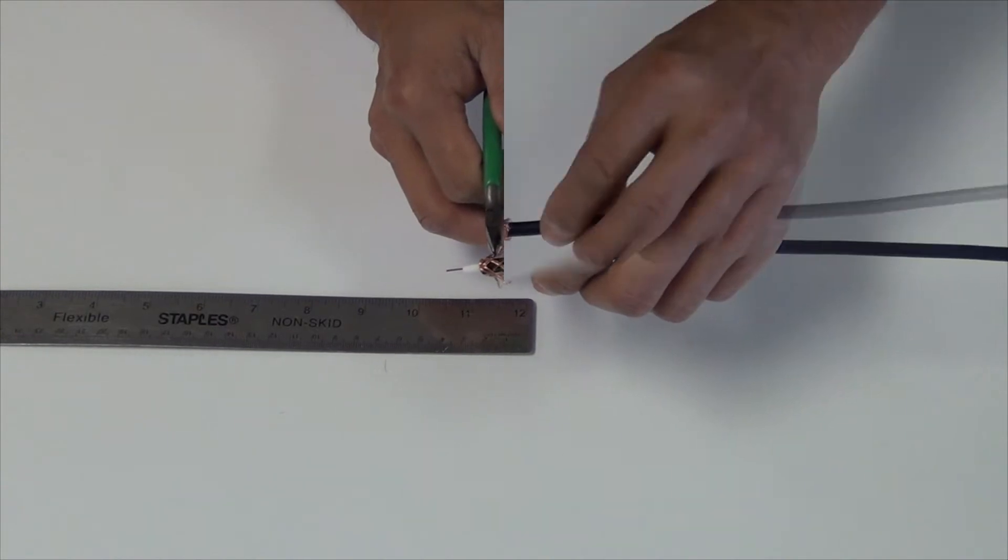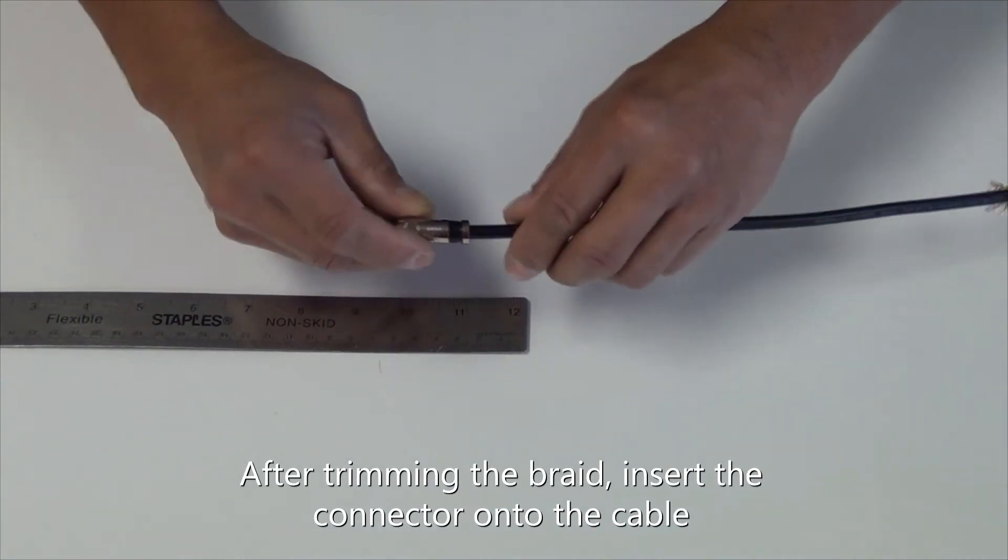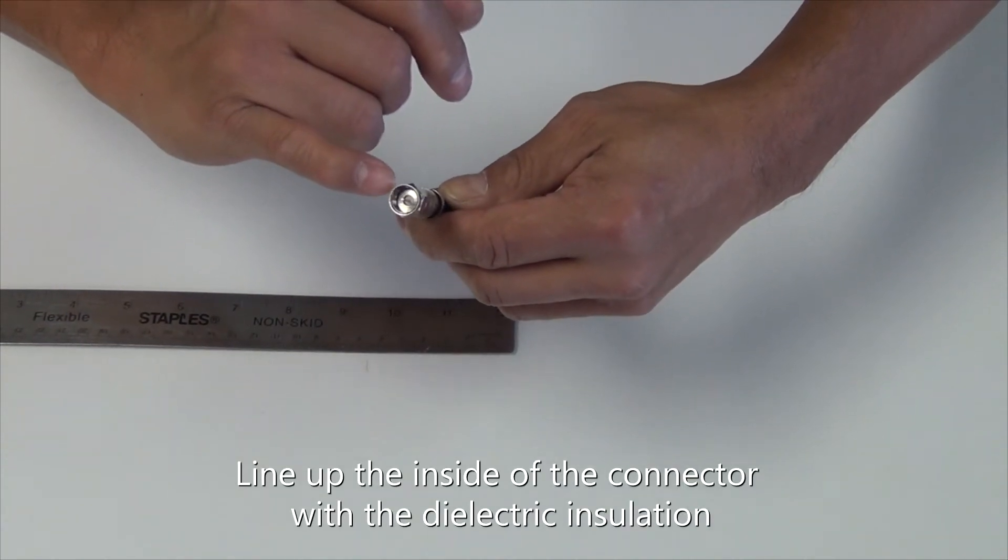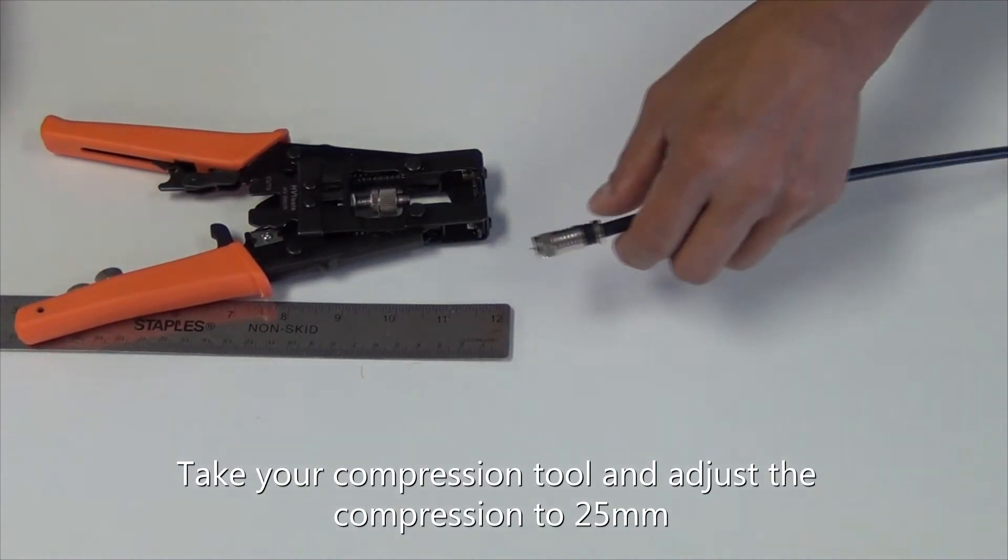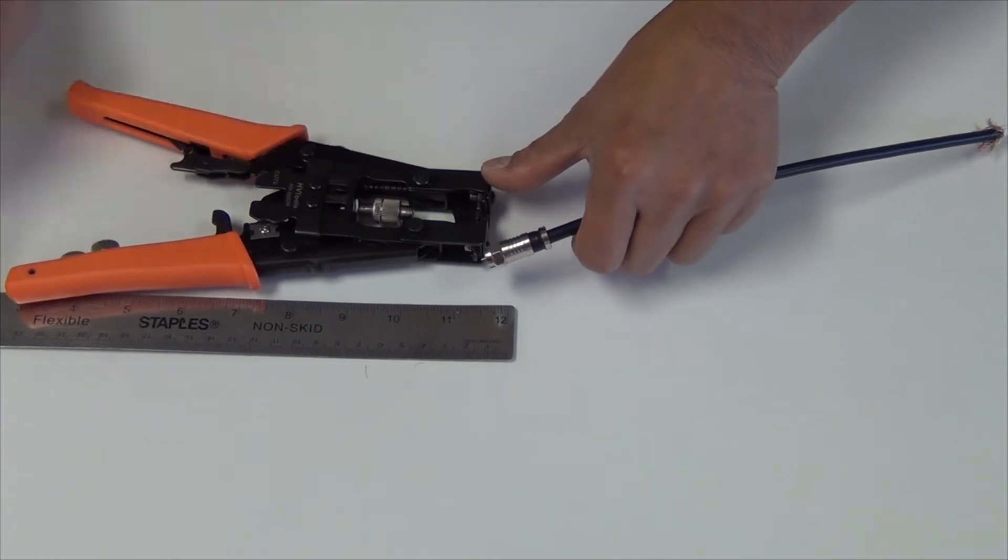After trimming the braid, insert the connector onto the cable. Line up the inside of the connector with the dielectric insulation. Take your compression tool and adjust the compression to 25 millimeters. Insert the connector.